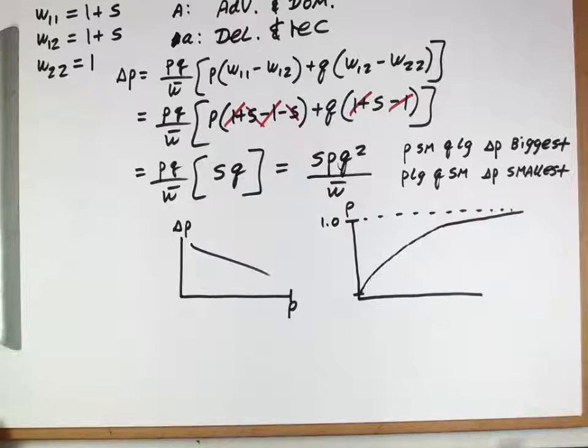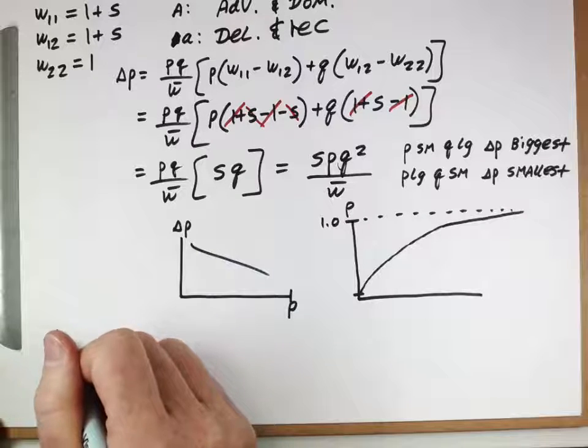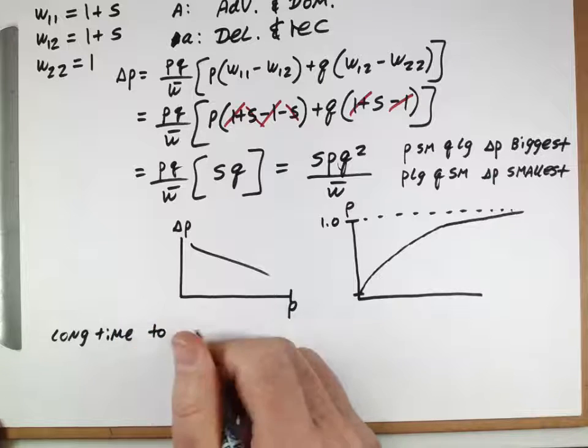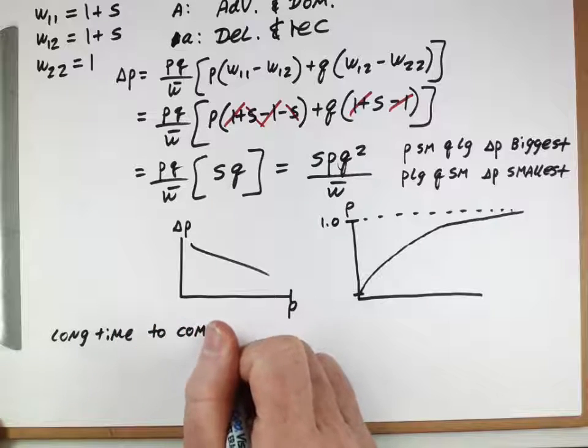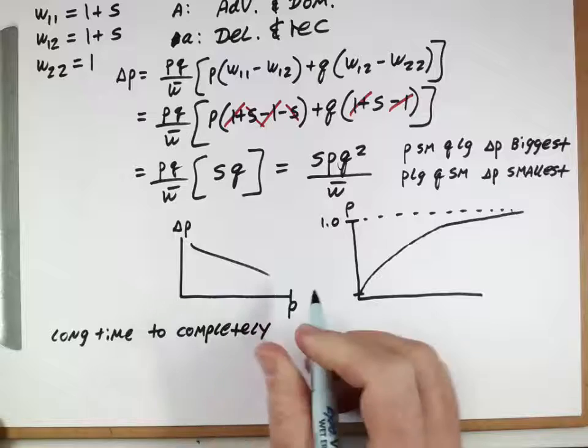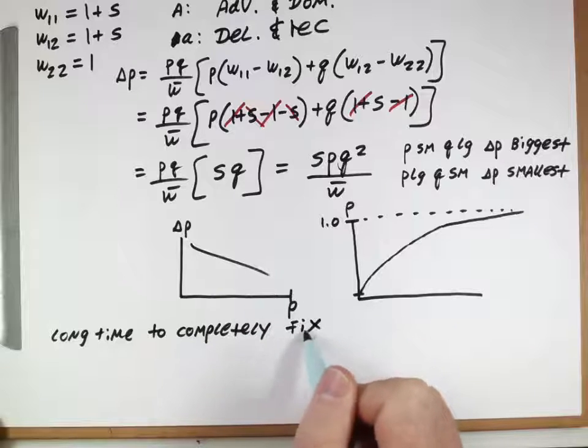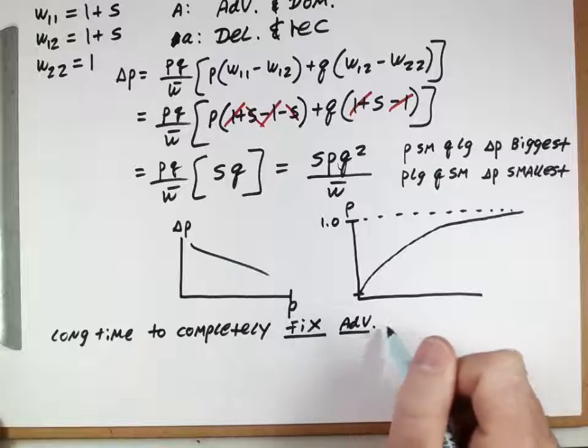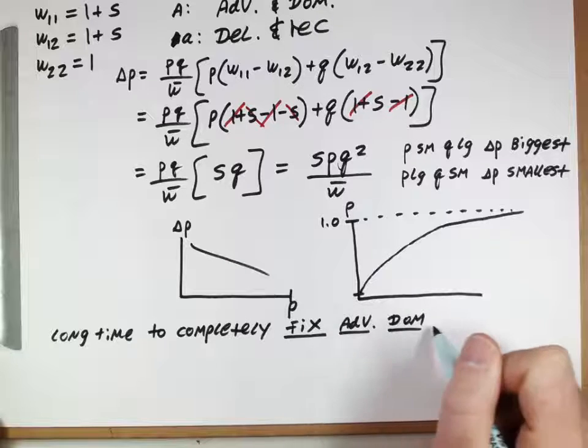And so, what we see from this result is that it actually takes a very long time to completely fix advantageous dominant alleles.